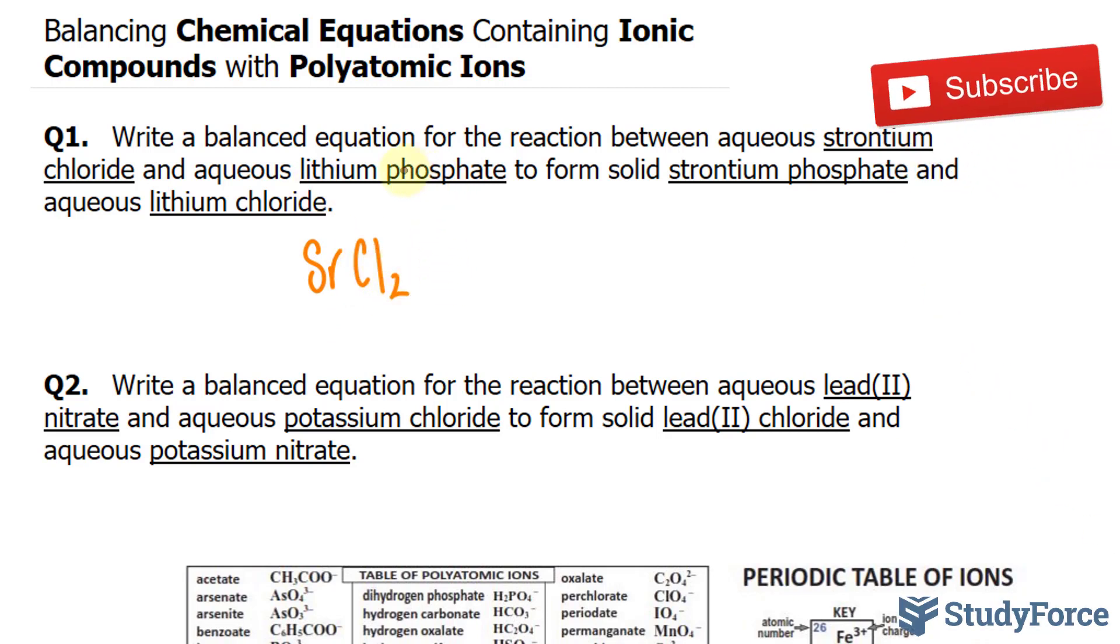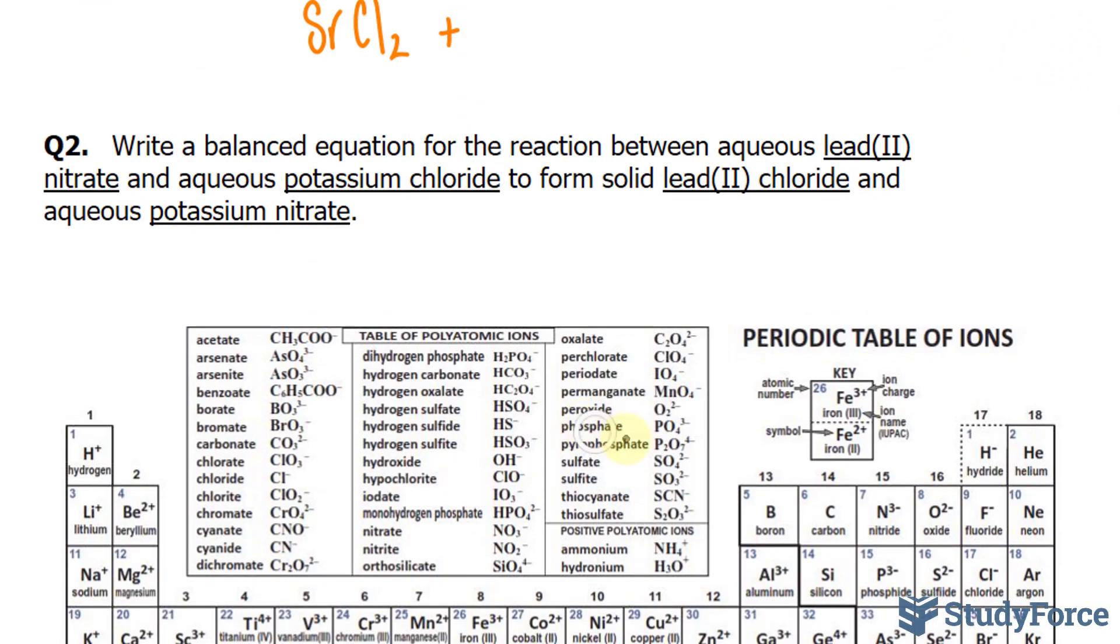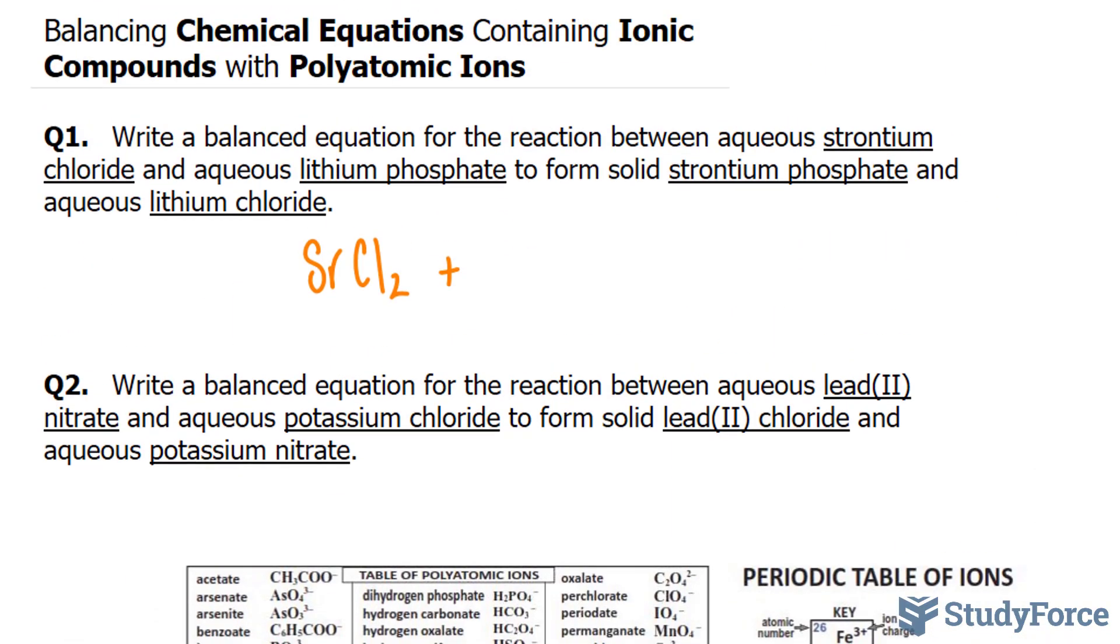Now lithium phosphate. Phosphate is a polyatomic ion and has the formula PO4 3 minus. Lithium is the third element in the periodic table and has the symbol Li and a charge of 1 plus.